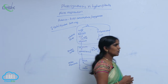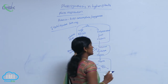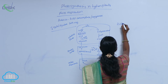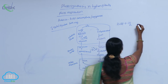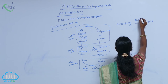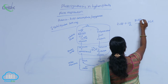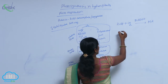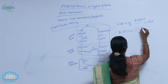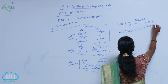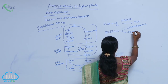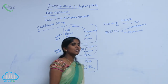To understand photorespiration, we first need to know about the activity of the Rubisco enzyme. In the C3 cycle, RuBP takes CO2 and produces PGA in the presence of RuBP carboxylase and oxygenase, also called Rubisco enzyme. The Rubisco enzyme plays a dual role: one role is carboxylation as carboxylase, and the next is oxygenation as oxygenase.